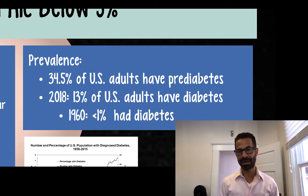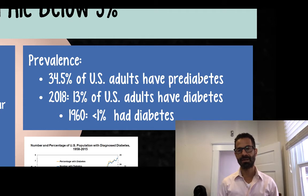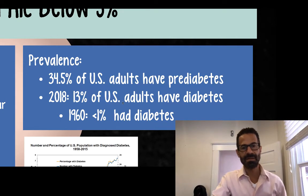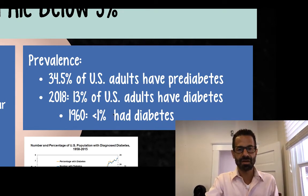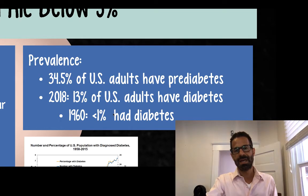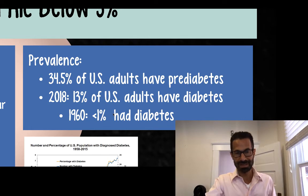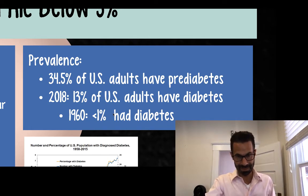2018 is the year with the most recent data. 13 percent of U.S. adults have diabetes. That might not sound like a lot, except if you look at 60 years ago, less than one percent of U.S. adults had diabetes. So what was less than one in a hundred is now more than one in ten over 60 years.